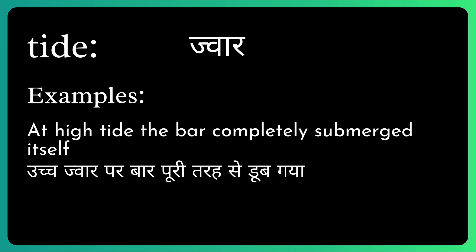Let's take an example which you will understand better. At high tide, the bar completely submerged itself. When joar came, when the water came, there was a lot of joar. Then the bar totally submerged — it was completely submerged.